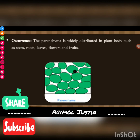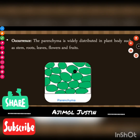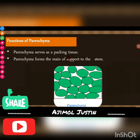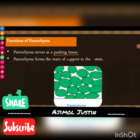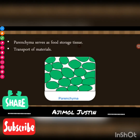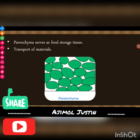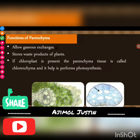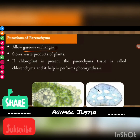There are spaces called intercellular spaces visible in the figure. Parenchyma cells are found in stems, fruits, leaves, and flowers. As for function, parenchyma serves as a packing tissue, gives main support to the stem, and serves as food storage. It also helps in transport of materials and allows gaseous exchange, and stores waste products of plants.